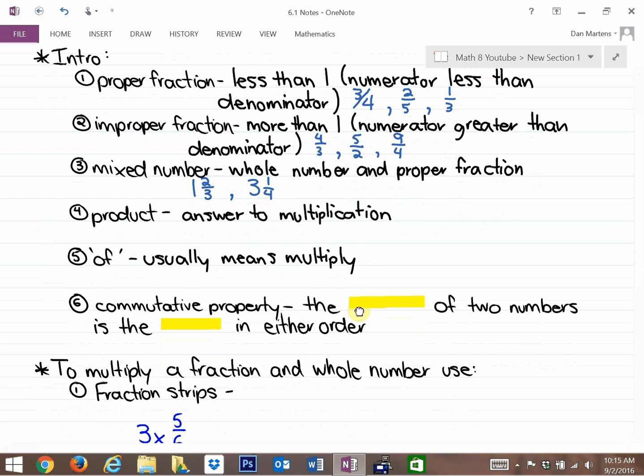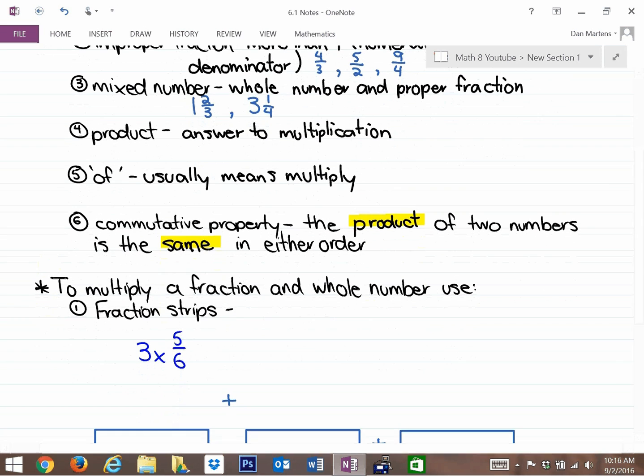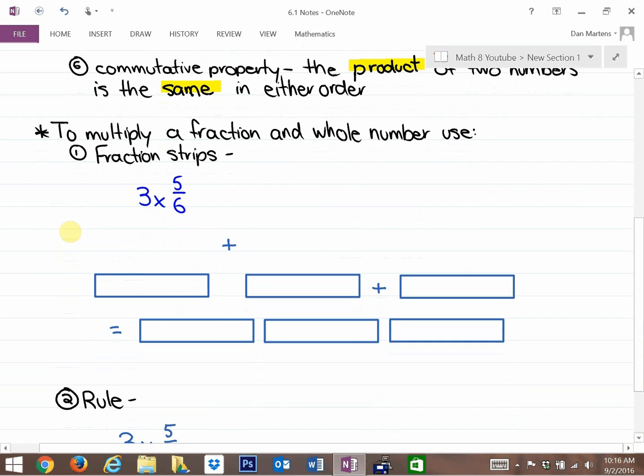The commutative property says that the product of two numbers is the same in either order. So 2 times 3 is equivalent to 3 times 2. 4 times 5 is equivalent to 5 times 4.